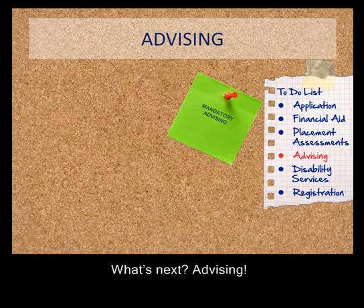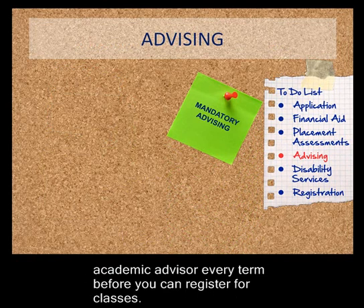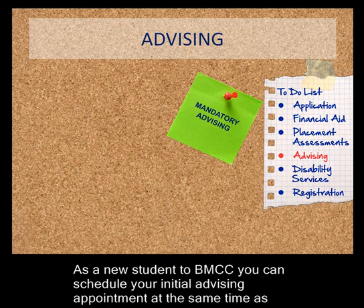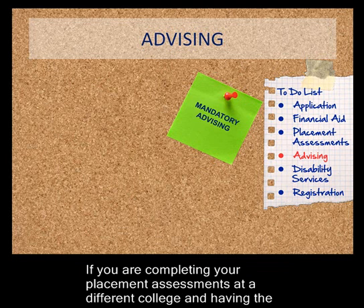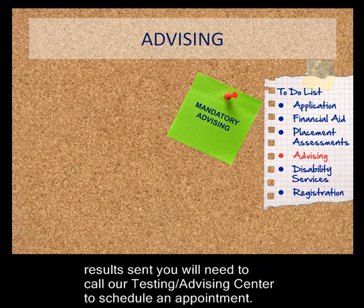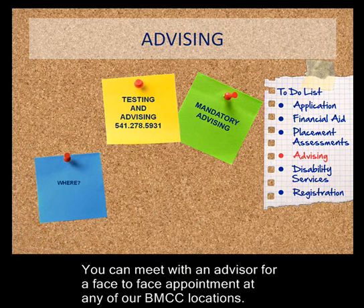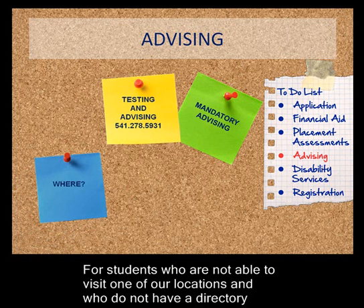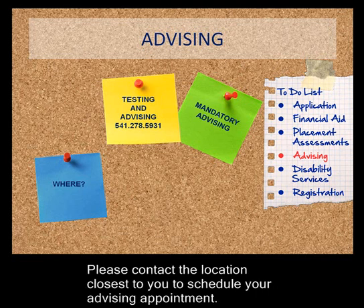What's next? Advising. BMCC has mandatory advising, which means that you are required to meet with an academic advisor every term before you can register for classes. As a new student to BMCC, you can schedule your initial advising appointment at the same time as you take your placement assessments. If you are completing your placement assessments at a different college and having the results sent to BMCC, you will need to contact our Testing and Advising Center to schedule an appointment.